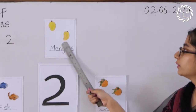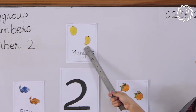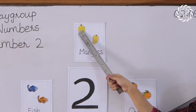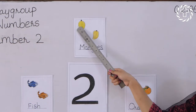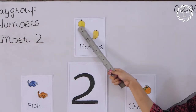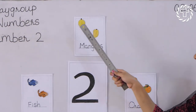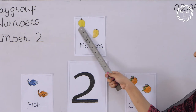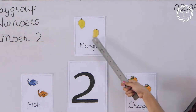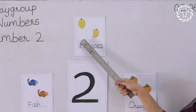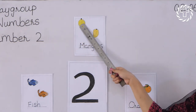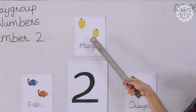Look at this picture. How many oranges are here? How many mangoes are here? One, two. How many mangoes are here? One, two.